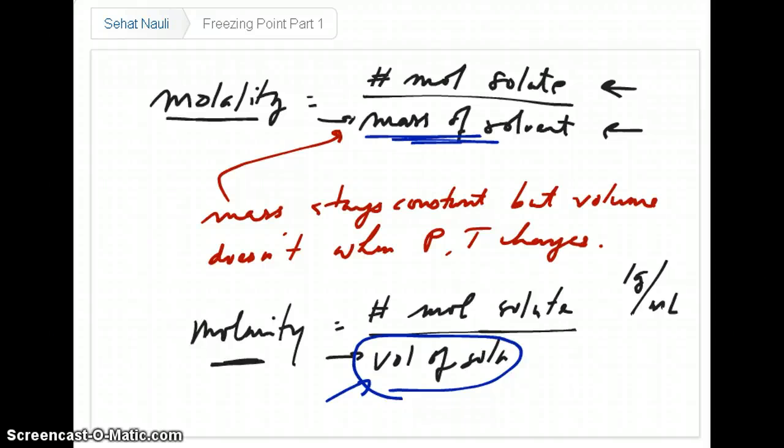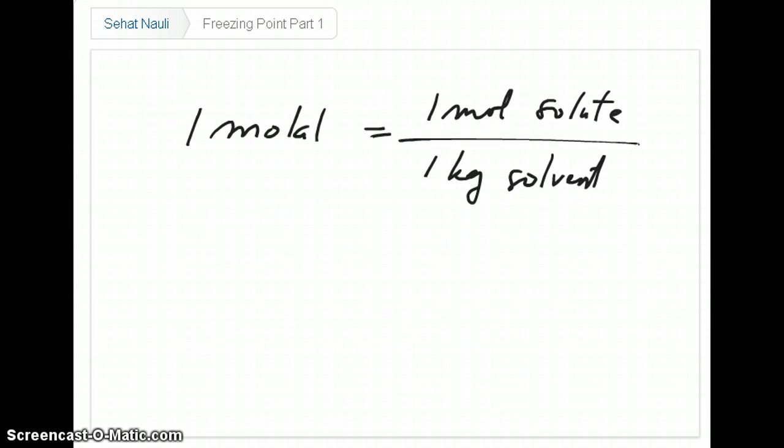However, mass is a constant. It doesn't change. So if you have a mass of, for example, one kilogram at a certain temperature and pressure, that mass is going to stay the same whether you change the pressure and temperature. So as a result, in certain applications, people prefer to use molality because the denominator, which is mass, doesn't change in this case.